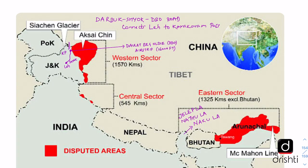Before moving to the key points, let us look at where the dispute is and which are the points of standoff between India and China. The India-China border is marked by three sectors: the western sector, a central sector, and the eastern sector. Right now the confrontation between India and China is mostly in the western sector, though there is some dispute also going on at Nakula in Sikkim. India and China share more than 3,000 kilometers of boundary.